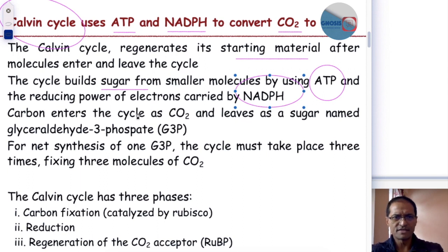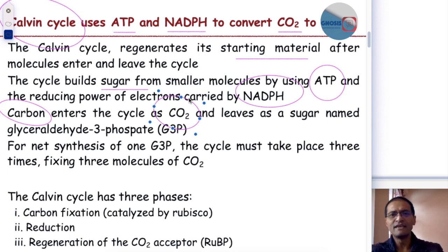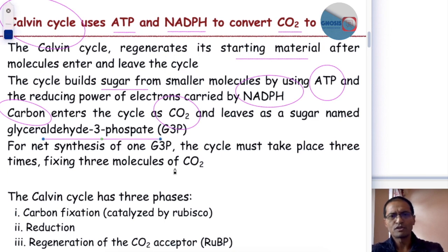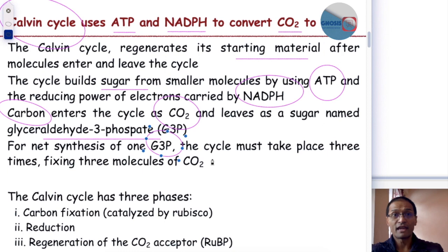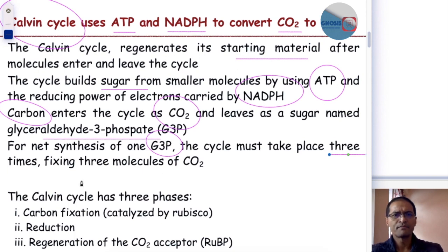A very important point to remember is that carbon enters the Calvin cycle as carbon dioxide, and when it leaves the cycle, it leaves as glyceraldehyde-3-phosphate. For the net synthesis of one glyceraldehyde-3-phosphate molecule, the Calvin cycle must take place three times, thereby fixing three molecules of carbon dioxide.